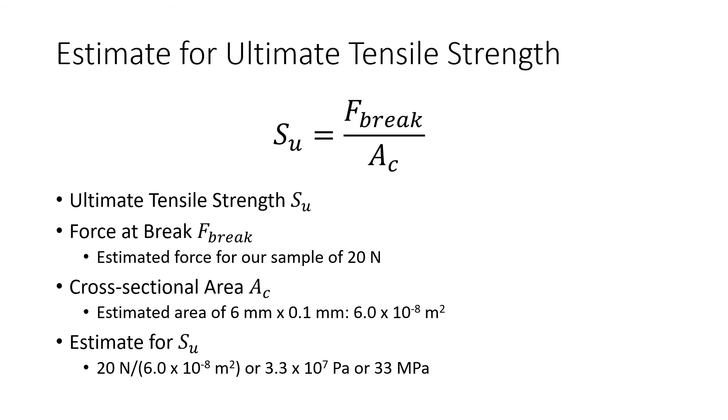To estimate the ultimate tensile strength for a specimen, we look at the force at break, which was approximately 20 N. We also account for the cross-sectional area, Ac, which we can estimate to be about 6 × 10⁻⁸ m².